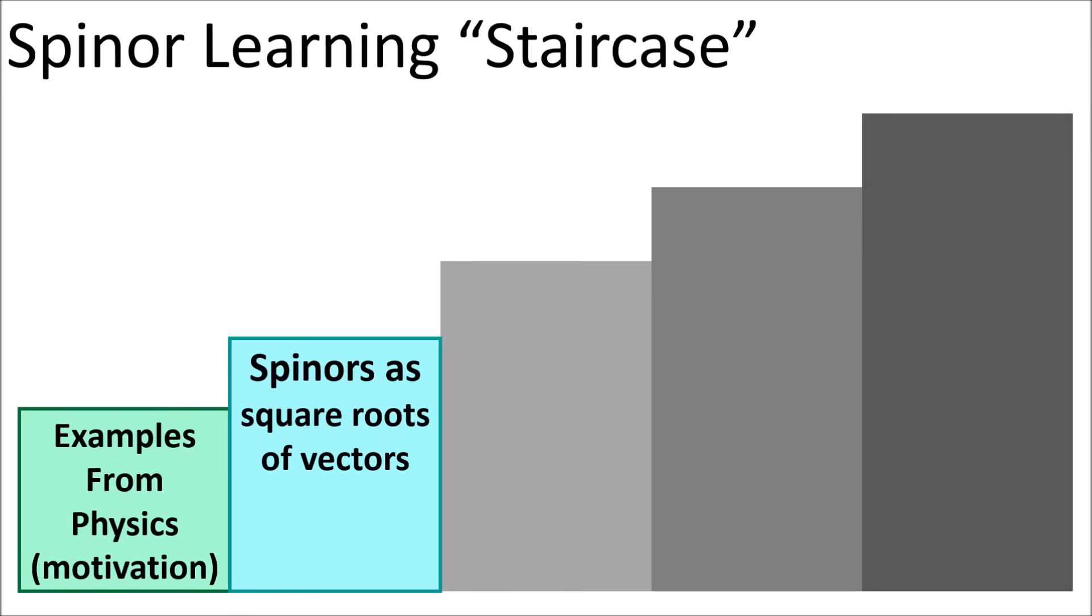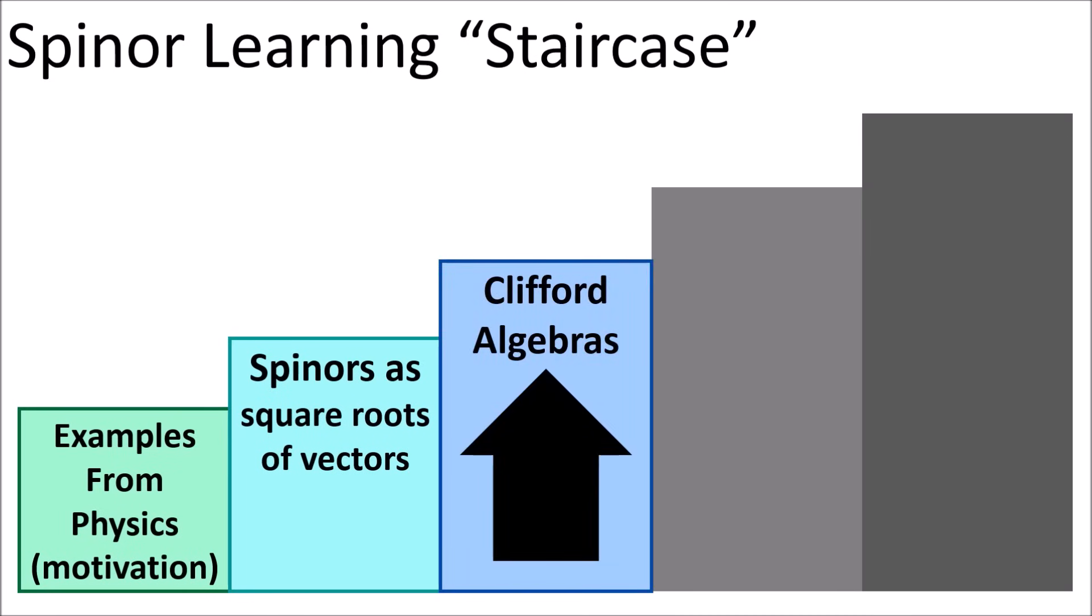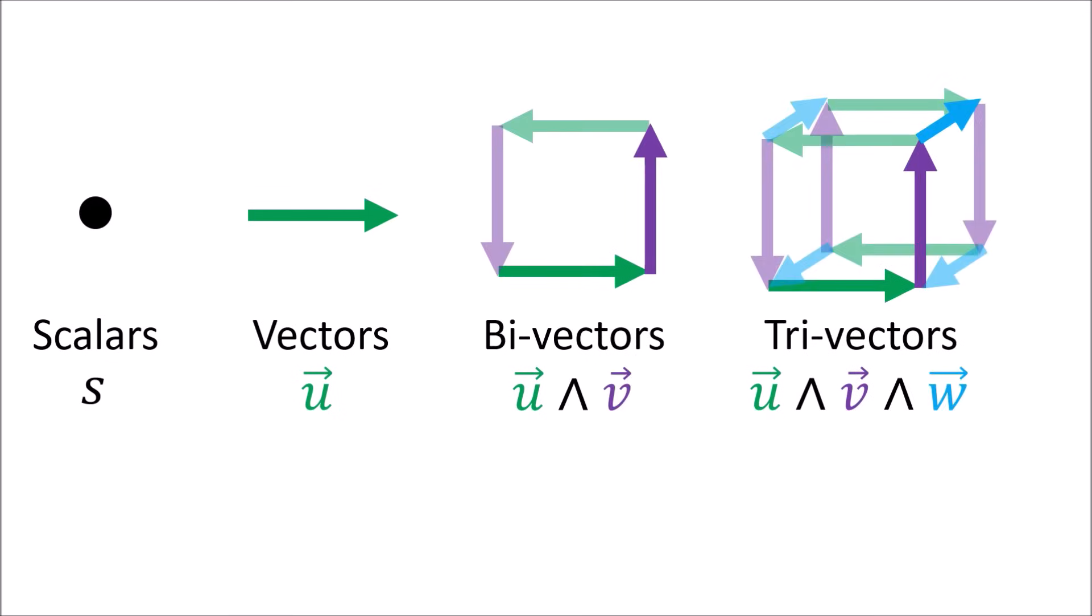The next step in the staircase is Clifford algebras. Clifford algebras are a bit abstract, but they help us define spinors in any dimension, not just three or four dimensions. Most physics students are familiar with scalars and vectors, but sometimes in physics it's more useful to use their higher dimensional analogs: bivectors, trivectors, and so on.